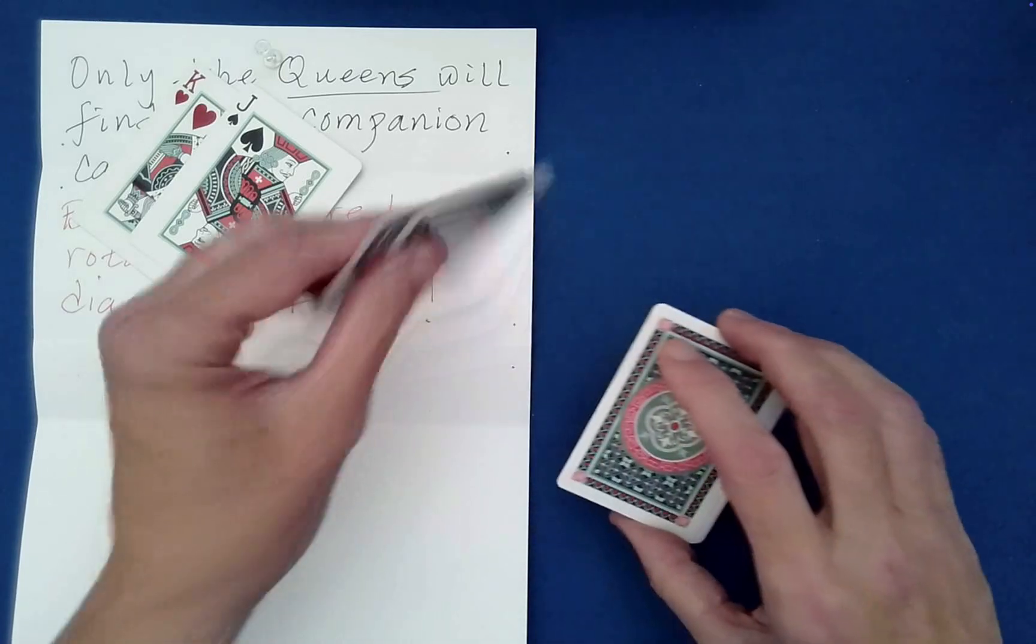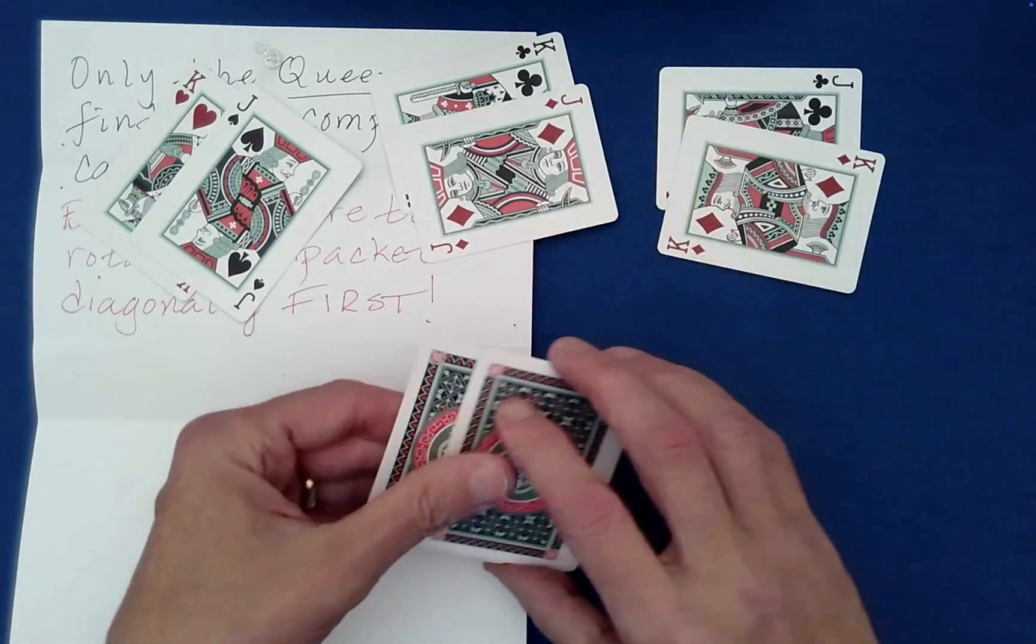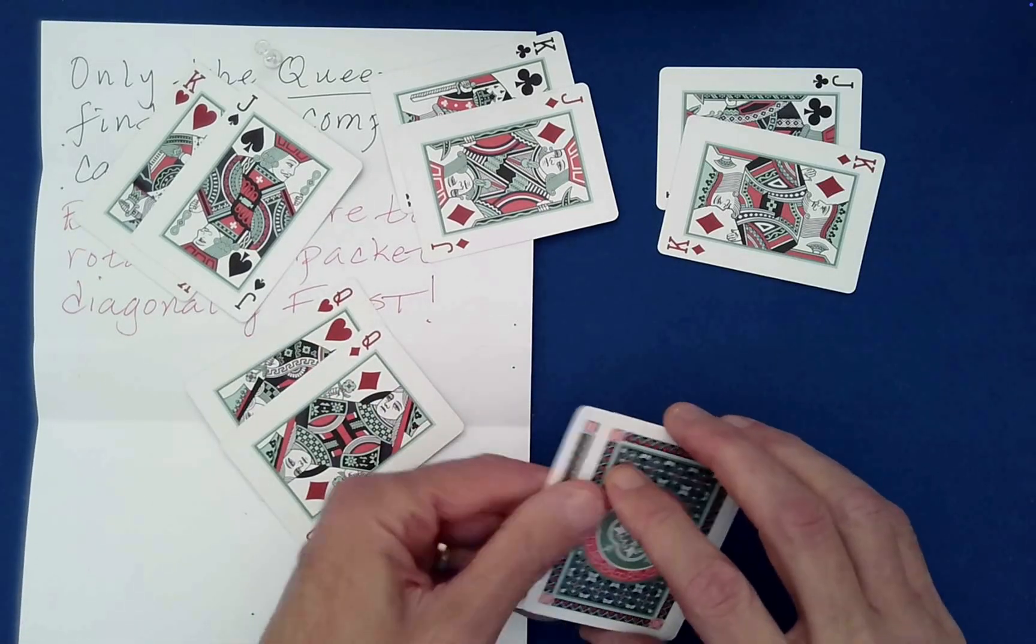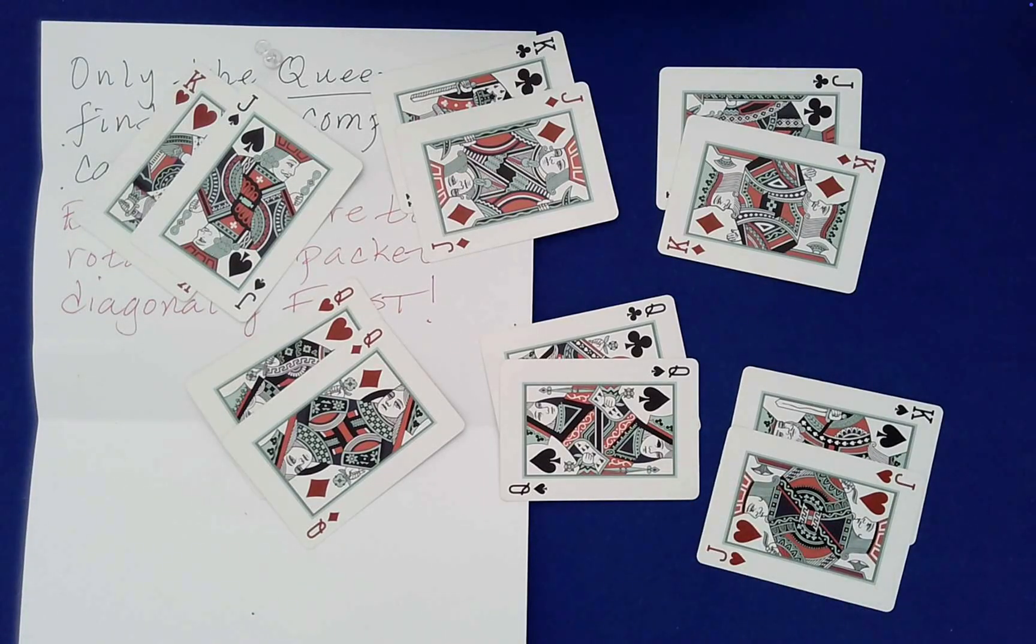Here they claim if I rotate the packet diagonally first, the queens will find their companion cards and no one else will. Oh, there's the two red queens, two black queens, and the kings and jacks are obviously confused because they haven't found any of their companion cards.